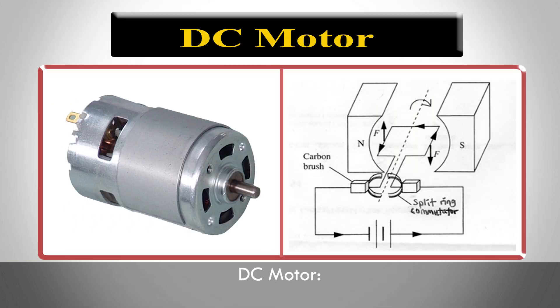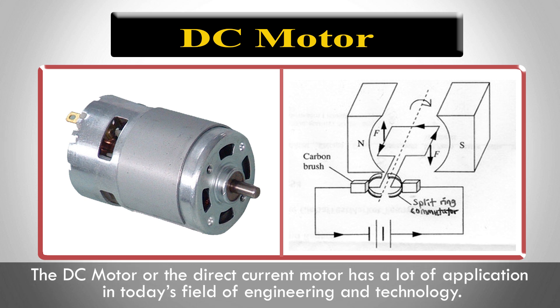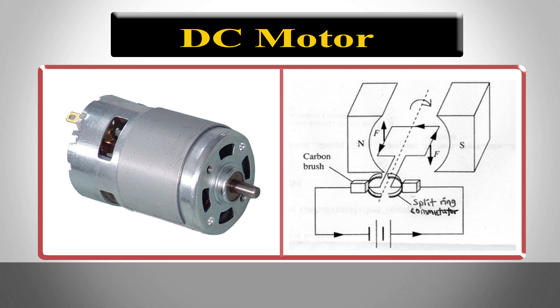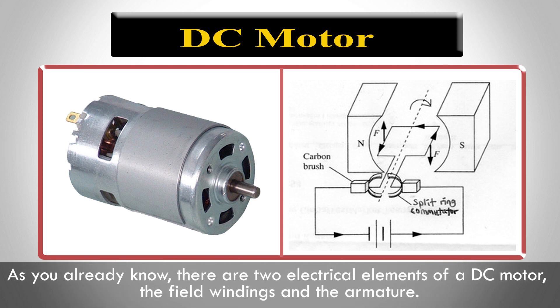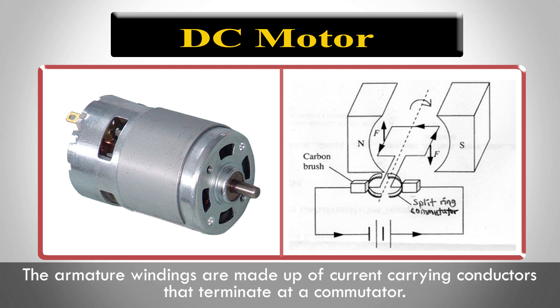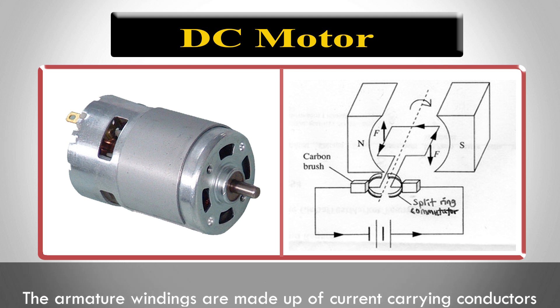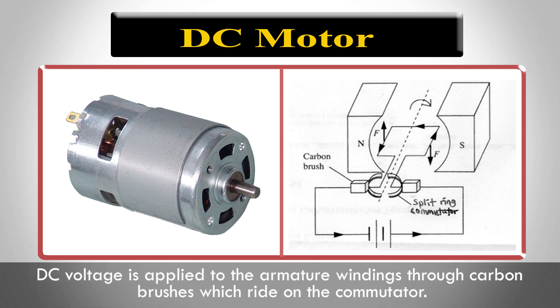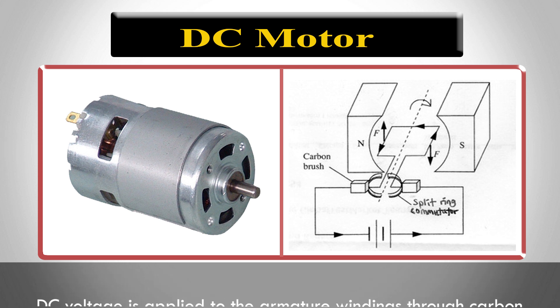The DC motor, or direct current motor, has a lot of applications in today's field of engineering and technology. There are two electrical elements of a DC motor: the field windings and the armature. The armature windings are made up of current carrying conductors that terminate at a commutator. DC voltage is applied to the armature windings through carbon brushes which ride on the commutator.